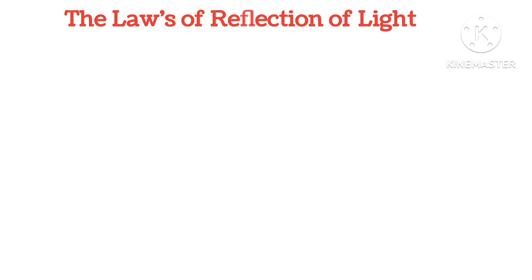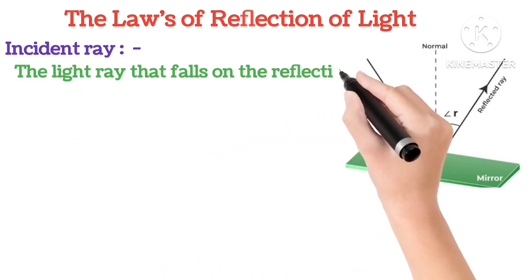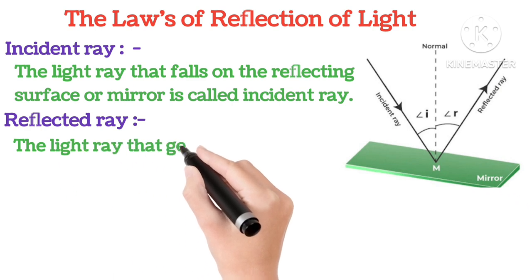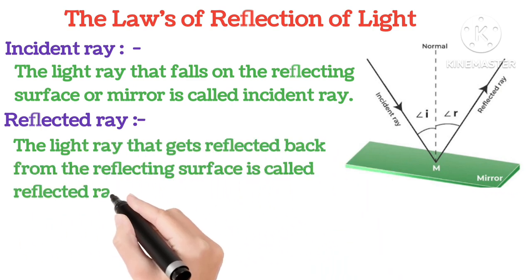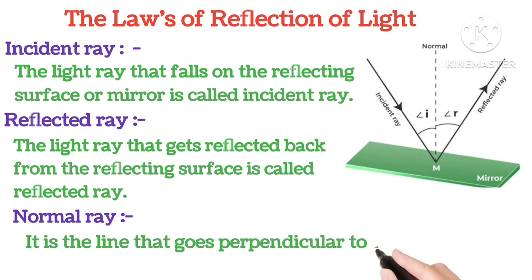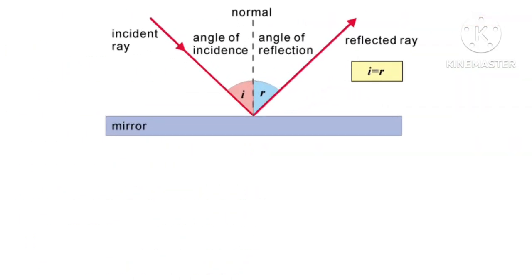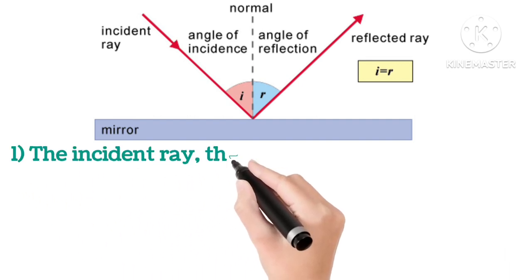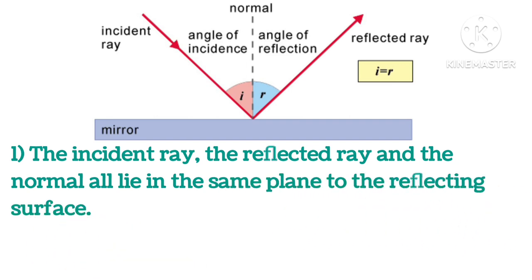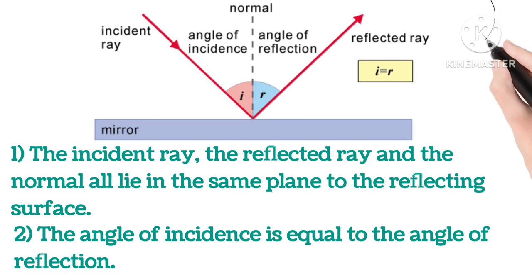The laws of reflection of light. Incident ray: the light ray that falls on the reflecting surface or the mirror is called the incident ray. Reflected ray: the light ray that gets reflected back from the reflecting surface is called the reflected ray. Normal ray: it is the line that goes perpendicular to the reflecting surface. The two laws of reflection of light are: first, the incident ray, reflected ray and the normal all lie in the same plane to the reflecting surface; and second, the angle of incidence is equal to the angle of reflection, that is angle I is equal to angle R.